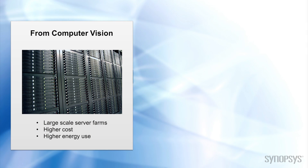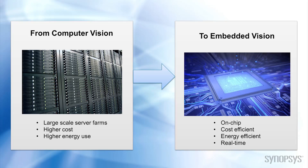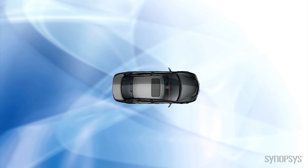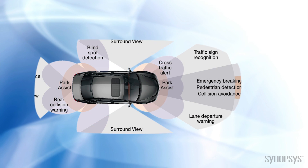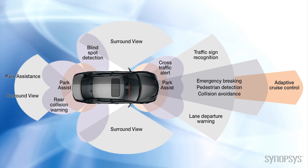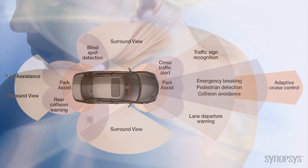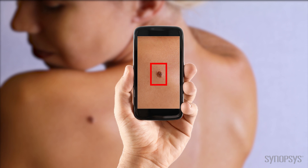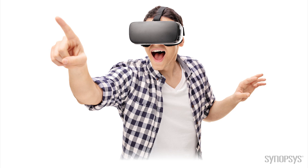Only recently has semiconductor technology advanced to the point where powerful yet low-cost and energy-efficient processors are available to execute these complex computer vision algorithms on embedded systems in real-time. These technological advances are leading embedded vision into an exciting future, where self-driving cars can see where they are going, medical devices recognize cancerous growth, and augmented reality goggles can place your favorite Pokemon in your living room.